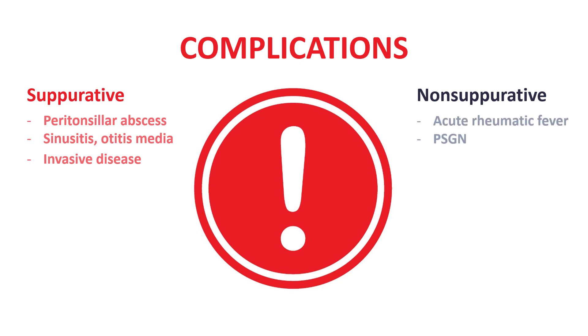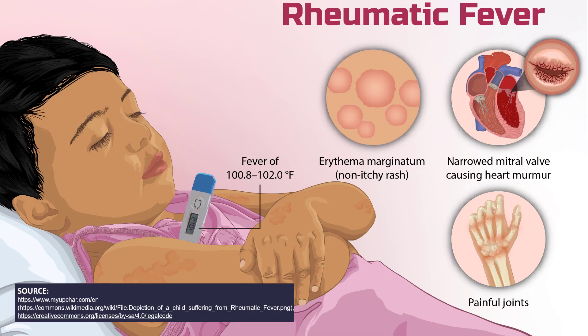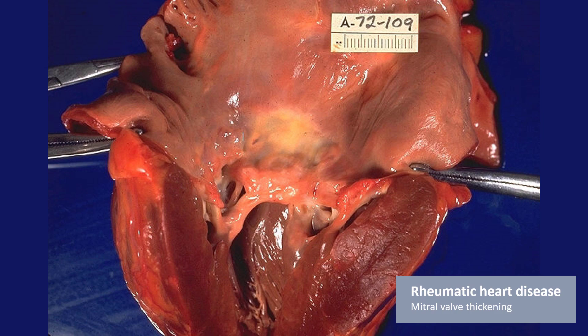But if there is one thing that we fear even more than these suppurative complications, it's non-suppurative complications — and by that I primarily mean acute rheumatic fever. We all remember from medical school that if you don't treat strep throat, your patient could get acute rheumatic fever, which is a severe immune-mediated disease that often affects the heart and it can lead to either death or severe disability.